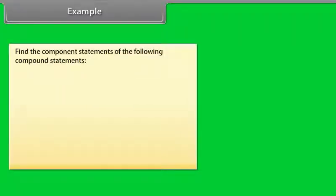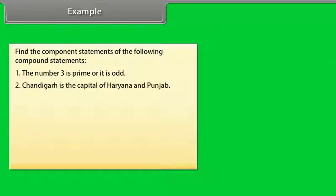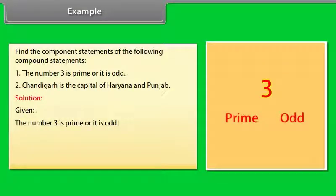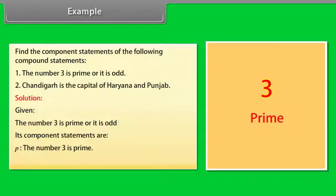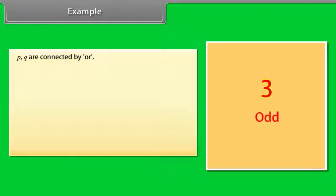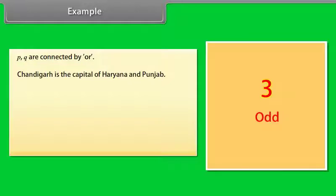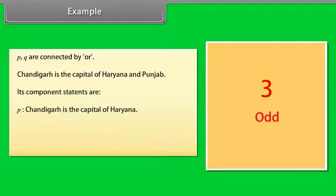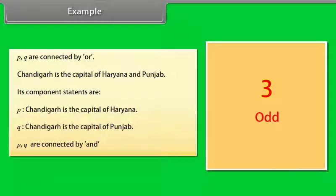Example: find the component statements of the following compound statements. (1) The number 3 is prime or it is odd. Component statements: P: the number 3 is prime; Q: the number 3 is odd. P and Q are connected by OR. (2) Chandigarh is the capital of Haryana and Punjab. Component statements: P: Chandigarh is the capital of Haryana; Q: Chandigarh is the capital of Punjab. P and Q are connected by AND.